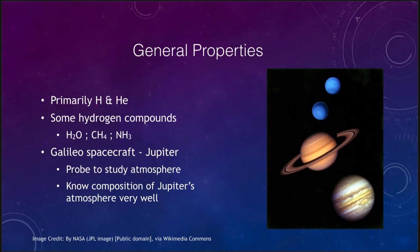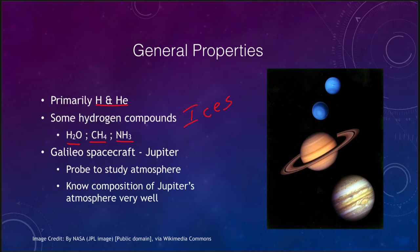All of the giant planets are made primarily of hydrogen and helium, and their next highest components are what we call the hydrogen compounds — sometimes called ices. Those are things like water (H2O), methane, and ammonia. These three make up a large percentage of the remaining part. Hydrogen and helium are the vast majority of the compositions of these planets, but the remaining portion is these icy compounds of water, methane, and ammonia.